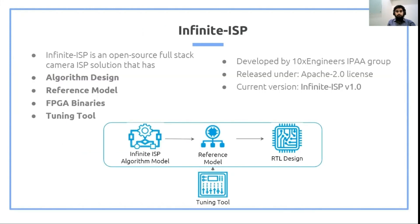Infinite ISP is a full-stack ISP solution released in open source. It has four major repositories in the form of models. The first is the algorithm design model, which contains the algorithms of each ISP block and provides users a convenient platform for algorithm design. The second is the reference model, which is the fixed-point representation of the algorithm design model. The reference model aids RTL development and testing. Then we have the RTL, and we also have the FPGA binaries, which is a full camera solution based on the Xilinx Kria KV260 Vision AI starter kit.